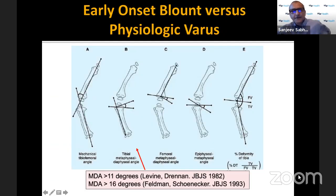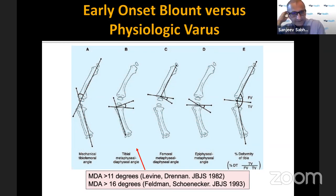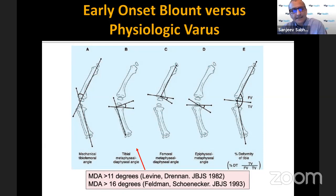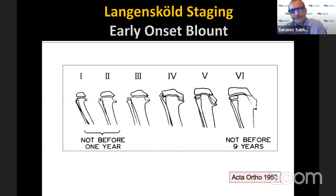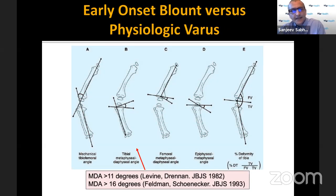The radiographic parameter most commonly used to differentiate physiologic varus from early onset Blount's in a very young child — say a two year old — is looking at the metadiaphyseal angle. I look at and measure that angle, but it's not the only or most reliable measurement; it is a good screening tool.